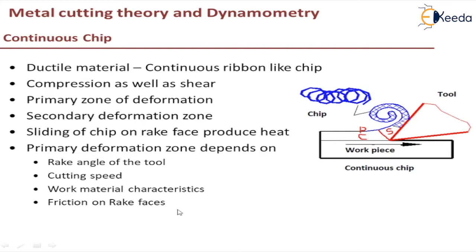The transition of work material into chip means the material suffers less overall deformation with an increase in rake angle — we will discuss rake angle further when covering cutting tool nomenclature. As rake angle is increased, transition of work material into chip becomes more gradual. As cutting speed increases, the thickness of the primary deformation zone shrinks. Work material characteristics like strength, strain hardening, strain rate, and heat conductivity affect the size of the primary zone, while friction on the rake face increases the size of both primary and secondary deformation zones.